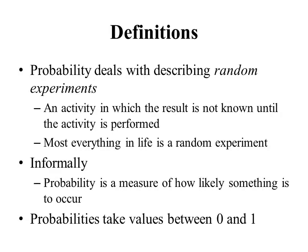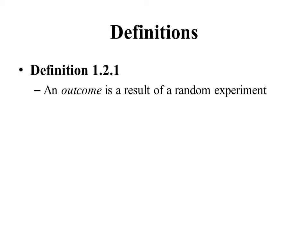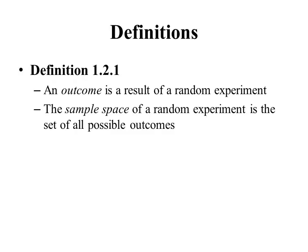Probabilities are numbers that take value between 0 and 1. In definition 1.2.1, we introduce three words. First of all, an outcome is a result of a random experiment — it's just another name for a result. Second, the sample space of a random experiment is the set of all possible outcomes. And third, an event is a subset of the sample space.